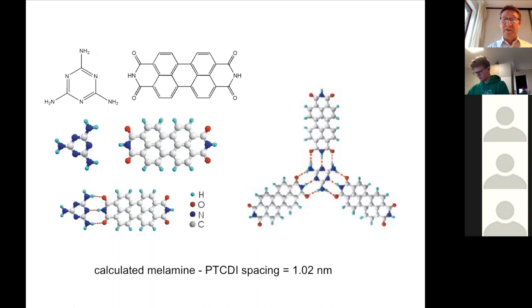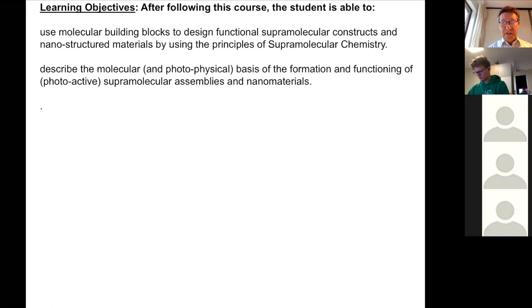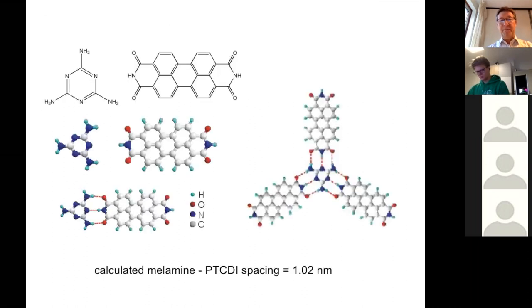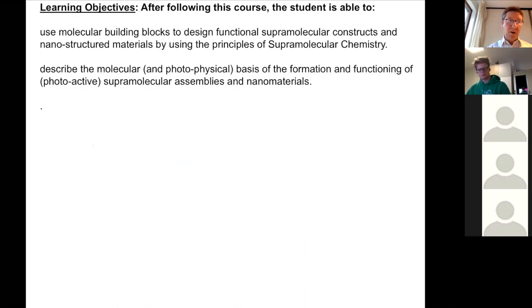You will be asked to predict a structure that is formed from components like you just saw here. And so if I give you these two components, you're supposed to understand from your chemistry background that these can form hydrogen bonds, they can form this structure, then they can form this structure, and then they can form a network. Making larger structures from molecular components, that is something that you will be expected to do.